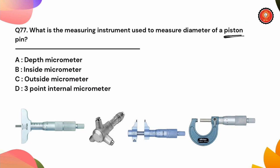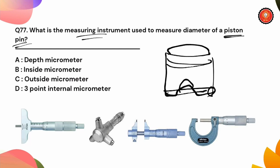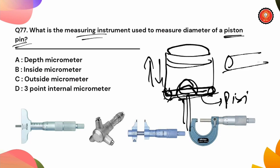For the piston pin measuring, we need to place the piston pin here. The piston pin is placed again, and we check the outside diameter using the outside micrometer.